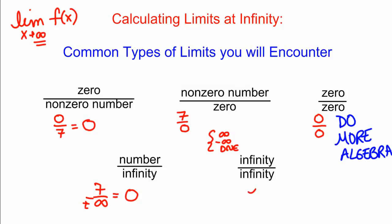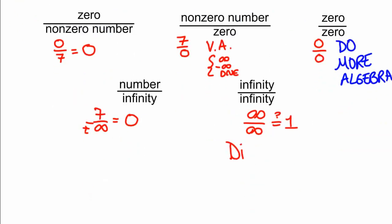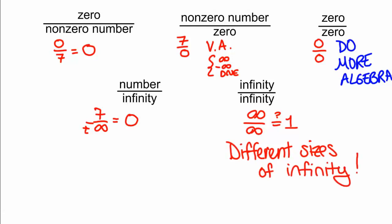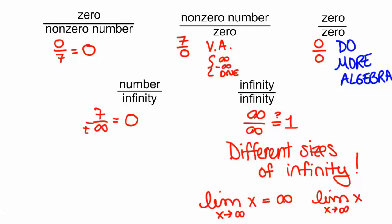And if your answer is infinity over infinity, this is where things can get somewhat interesting. A lot of people would guess that this is 1, but it doesn't have to be. The reason is because there are different sizes of infinity. For example, the limit as X goes to infinity of X is infinity, and so is the limit as X goes to infinity of X squared. But the X squared function gets to infinity faster, so in some sense it's a bigger infinity.